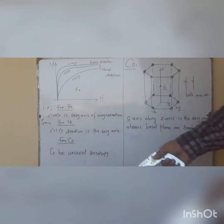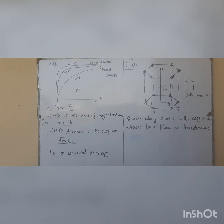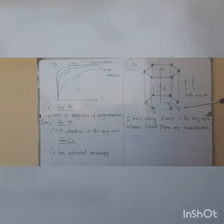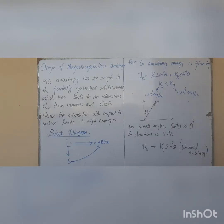For nickel, [1,1,1] is the easy axis direction. For cobalt, which has a hexagonal crystal structure, there is uniaxial anisotropy and the hexagonal C axis (along the Z direction) is the easy axis of magnetization at room temperature, whereas the basal planes lying in the X-Y direction are the hard directions. The magnetocrystalline anisotropy has its origin in partially quenched orbital moments, which lead to interaction between magnetic moments and the crystal electric field. The spin interacts with the orbital motion by spin-orbit coupling, and then the magnetization interacts with the lattice, leading to different energies for different orientations.